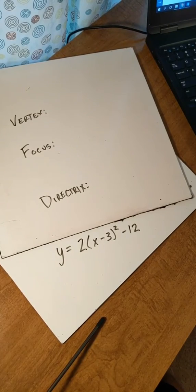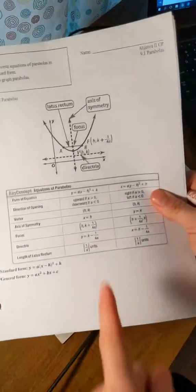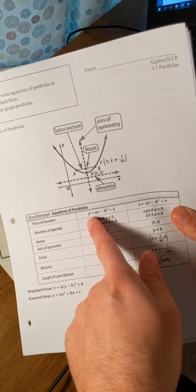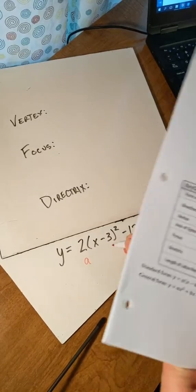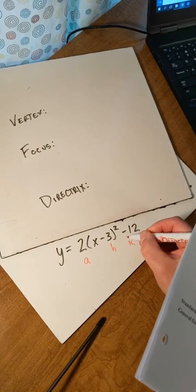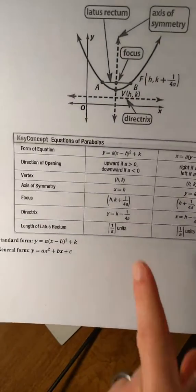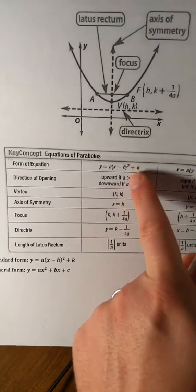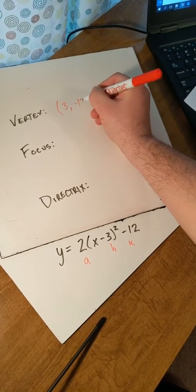Let's look at this information. First off, we know that in standard form these formulas go back to our notes. If you look at the very front page, this will tell us what one we're looking at. We have a y equals problem, so it's y equals a times x minus h squared plus k. So a is 2, h is 3, and k is negative 12. The vertex for this problem, from our formula chart, is at h, k — so h is 3, k is negative 12. There's our vertex.